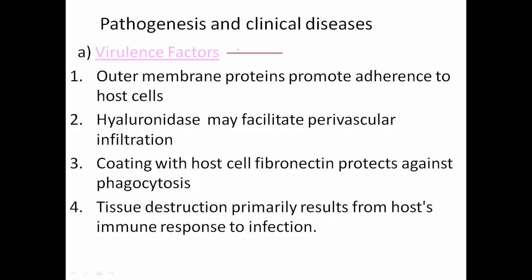Regarding pathogenesis, Treponema has several virulence factors. First, outer cell membrane proteins include adhesive proteins that promote adherence to host cells. Second, they produce hyaluronidase, which degrades hyaluronic acid in tissue lining to enter the tissue. Third, they coat themselves with host cell fibronectin proteins, which protects them against phagocytosis. Additionally, tissue disruption primarily results from the host immune response — when they enter the tissue, cover themselves with fibronectin from the host, and the host immune system tries to fight them, this further amplifies and weakens the disease condition of the host.